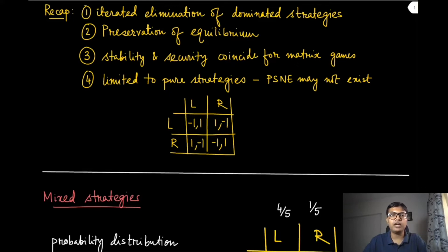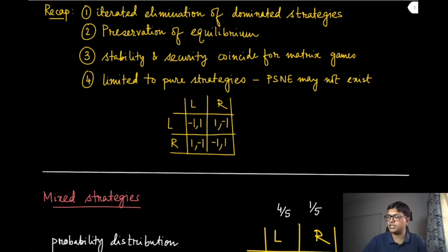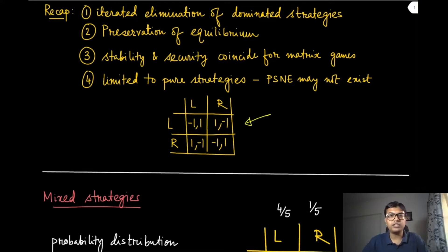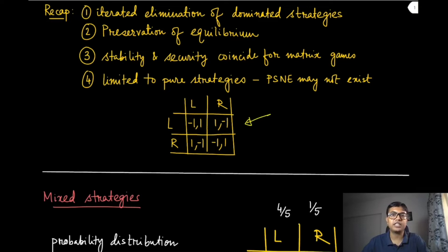We have also looked at certain kinds of games where pure strategy Nash equilibrium may not exist. One such game is given in this figure where we cannot find a pure strategy Nash equilibrium. That is one reason for refining the equilibrium notion — as we have done in the past when we could not find a dominant strategy equilibrium and went for pure strategy Nash equilibrium — now it is time to weaken it even further, and therefore we might get some other equilibrium strategy.